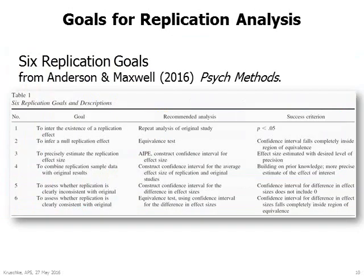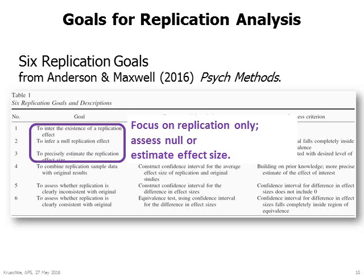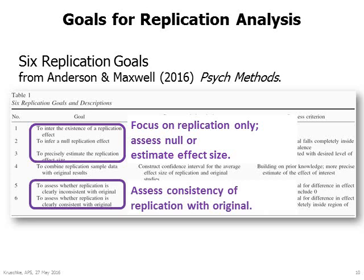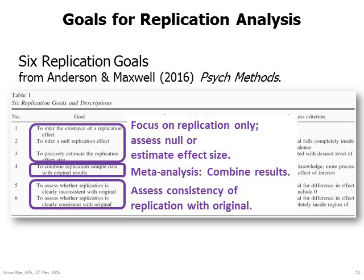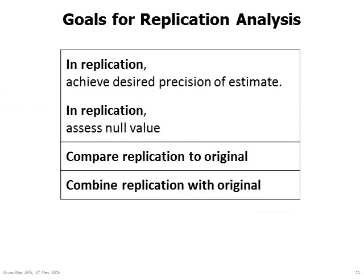Anderson and Maxwell provided a list of six goals for evaluating replication results. Three of the goals focus on the replication results only and assess the null hypothesis or estimate the effect. Two of the goals focus on assessing the consistency of the replication results with the original results. And one of the goals assumes results from both studies are representative of a common source and combines them.